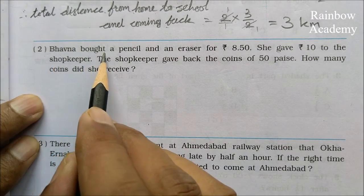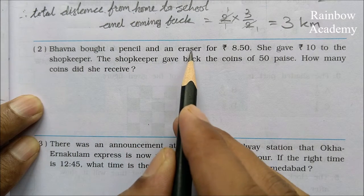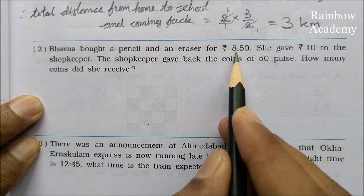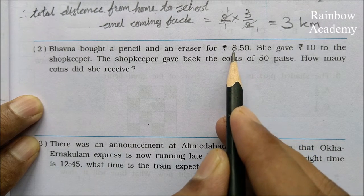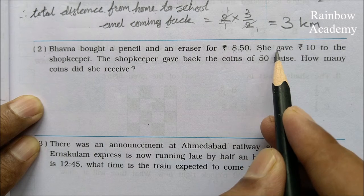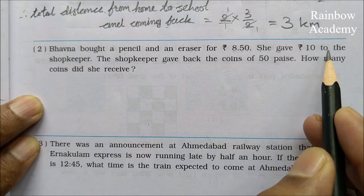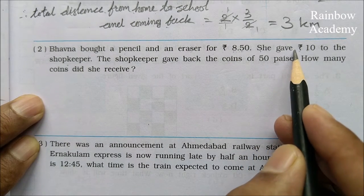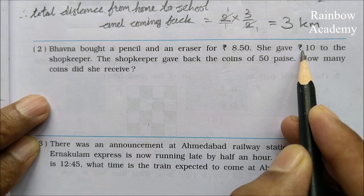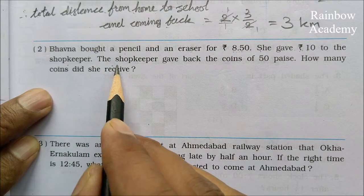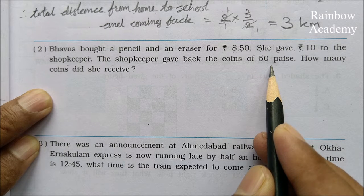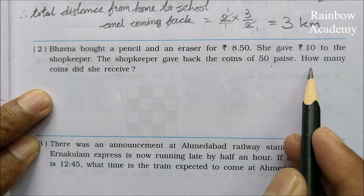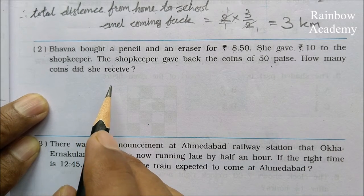Question 2: Bhavna bought a pencil and an eraser for Rs. 8.50. She gave Rs. 10 to the shopkeeper. The shopkeeper gave back the change as coins of 50 paisa. How many coins did she receive?